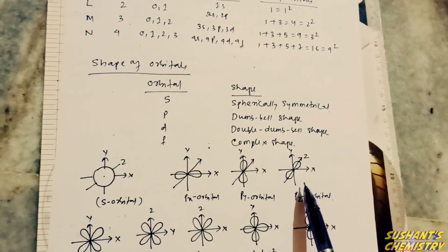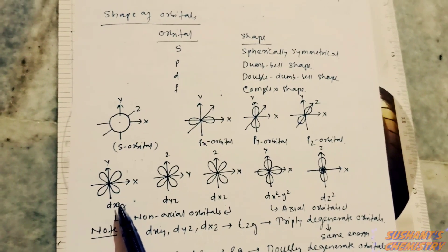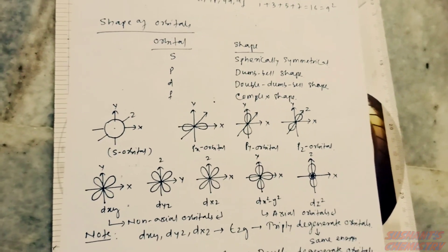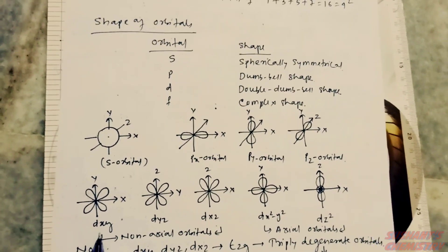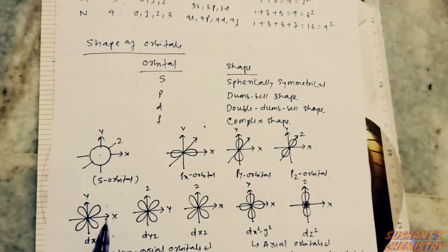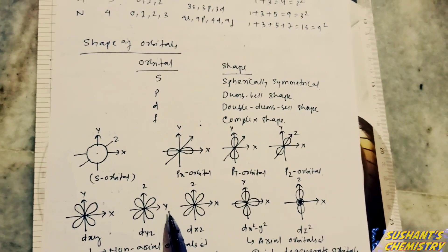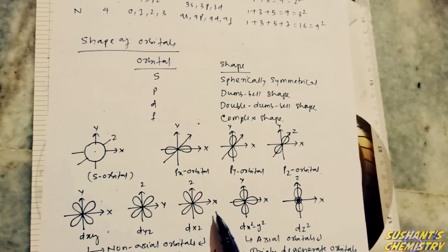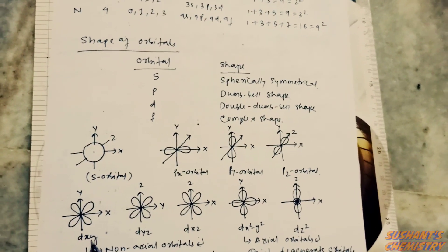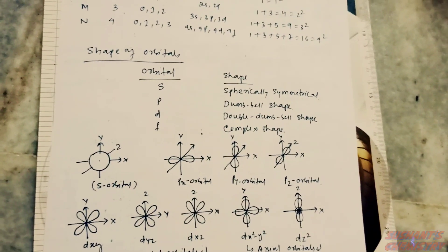The px orbital has a dumbbell shape along the x-axis, py along the y-axis, and pz along the z-axis. The d subshell contains five orbitals: dxy, dyz, dzx, dx²−y², and dz². The dxy orbital has a double dumbbell shape lying in between the x and y axes; dyz lies in between the y and z axes; and dxz lies in between the x and z axes.